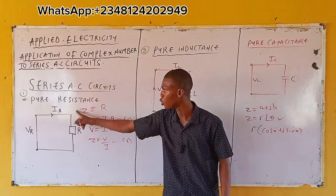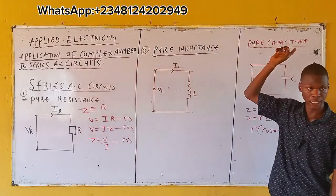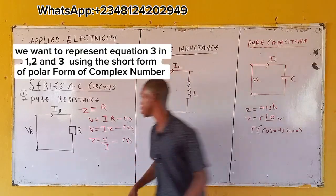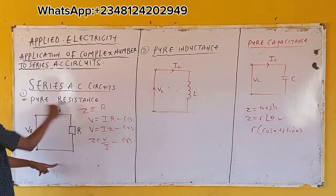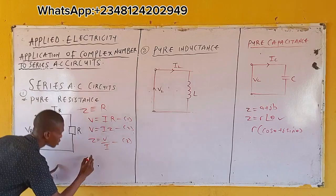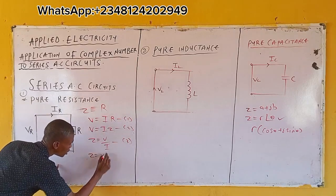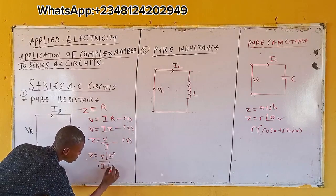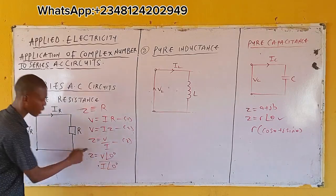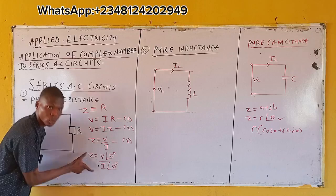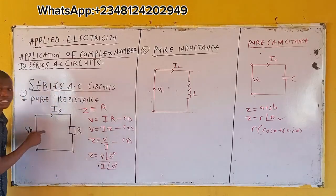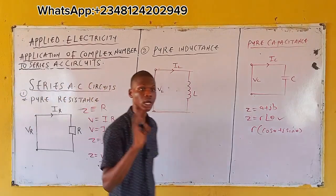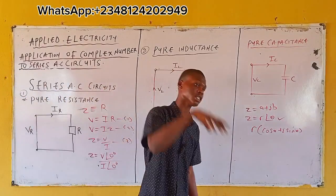Now we want to represent impedance Z for each of the three cases. For case one — pure resistance — your impedance from equation three becomes V∠0° divided by I∠0°. The interpretation is that your voltage is in phase with the current.